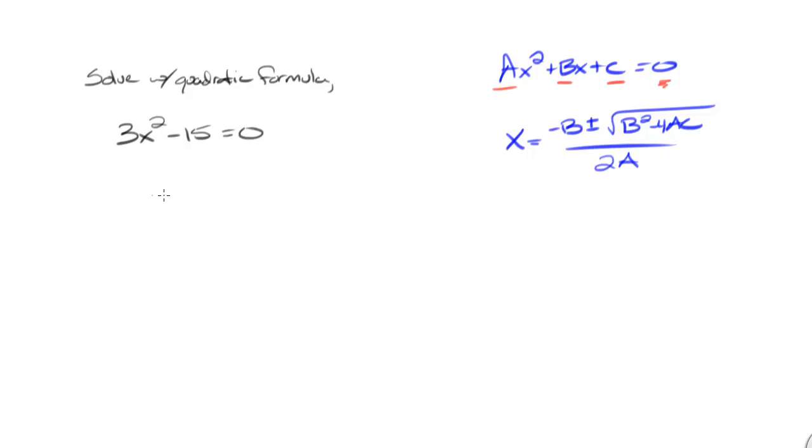Looking back at our example, the key here is we don't have a b value. We don't have this x term, but I could rewrite this with a b term. I just make it zero. So I get 3x squared plus zero x minus 15 equals zero.